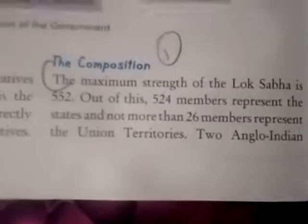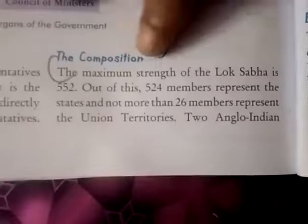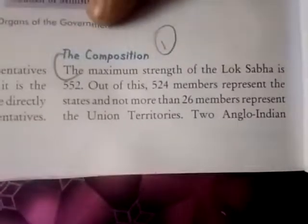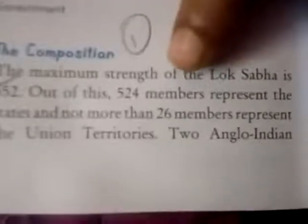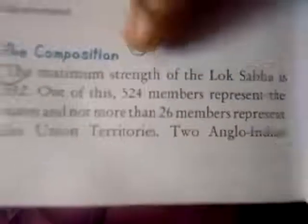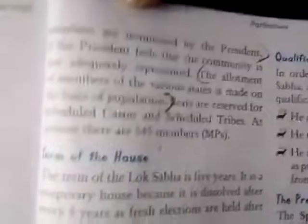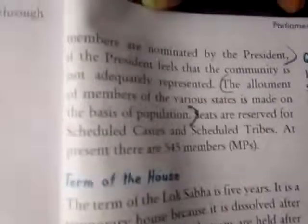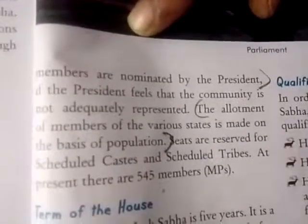Answer the following. The composition of the Lok Sabha — open page 110. The maximum strength of the Lok Sabha is 552. Out of these, 524 members are represented from the states and not more than 26 members represent the Union Territories. Two Anglo-Indians are nominated by the president. The allotment of members to the various states is made on the basis of population.